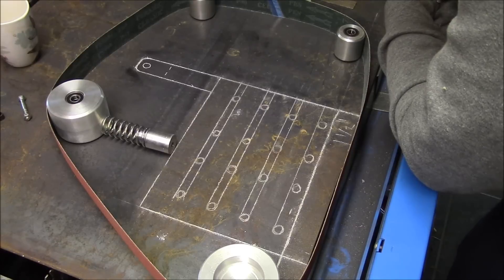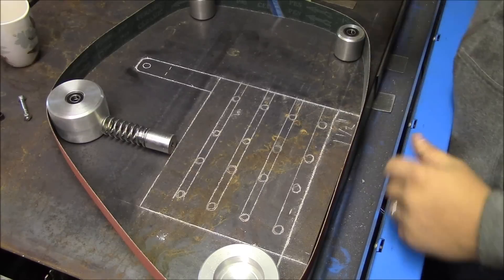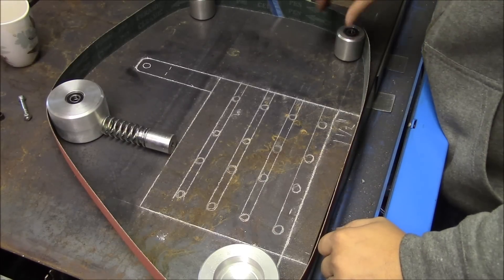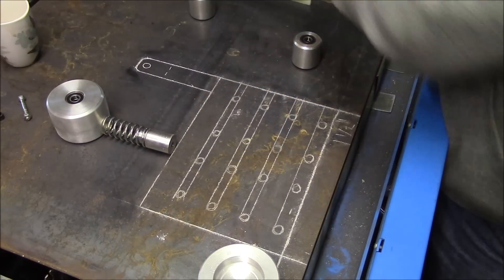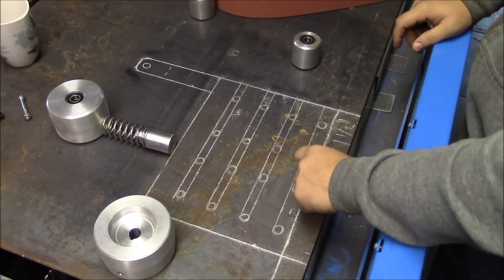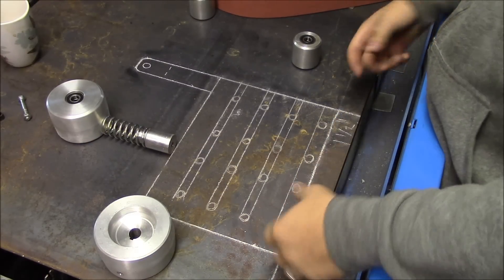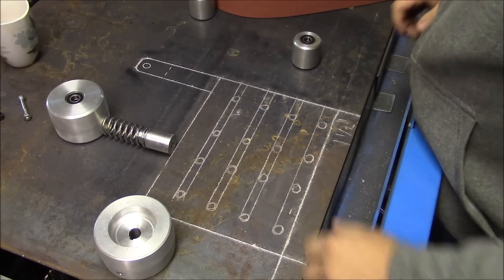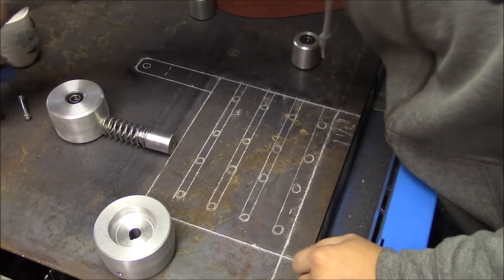Just to kind of go over what's going on here: I've got some inch and a half square stock that's going to be this base on both sides, and also that inch and a half square stock I'm going to be mounting the pillow blocks to.